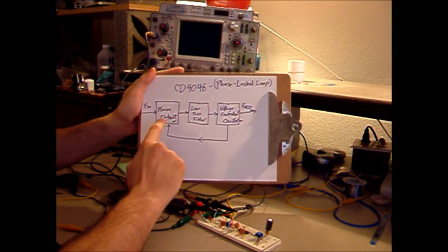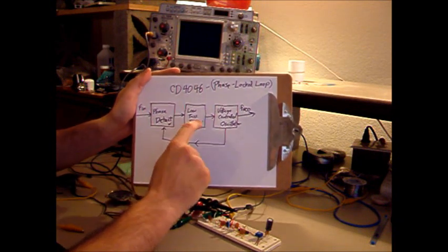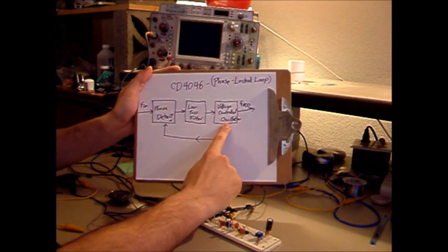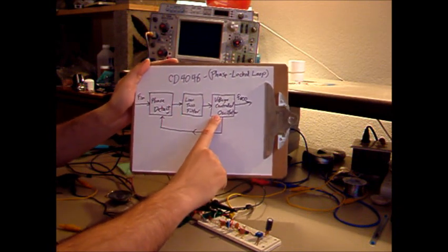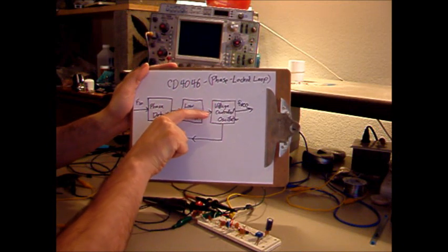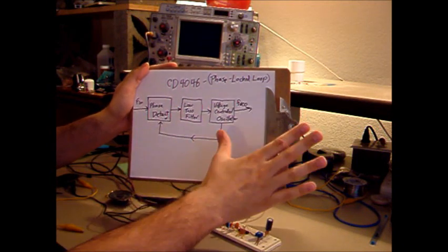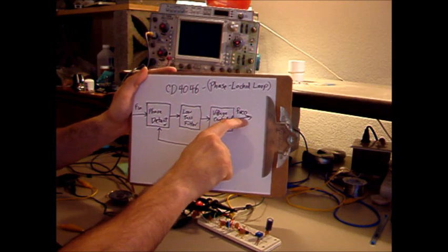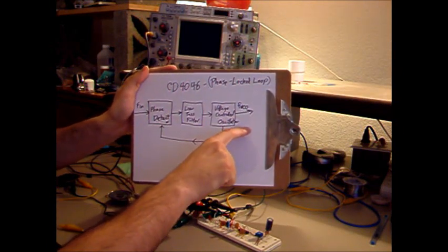The phase-locked loop consists of three parts: the phase detector, the low-pass filter, and the voltage-controlled oscillator. The voltage-controlled oscillator is probably the easiest to understand. You put in a DC voltage and it puts out some frequency. You raise the voltage, the frequency goes up. You lower the voltage, the frequency goes down.